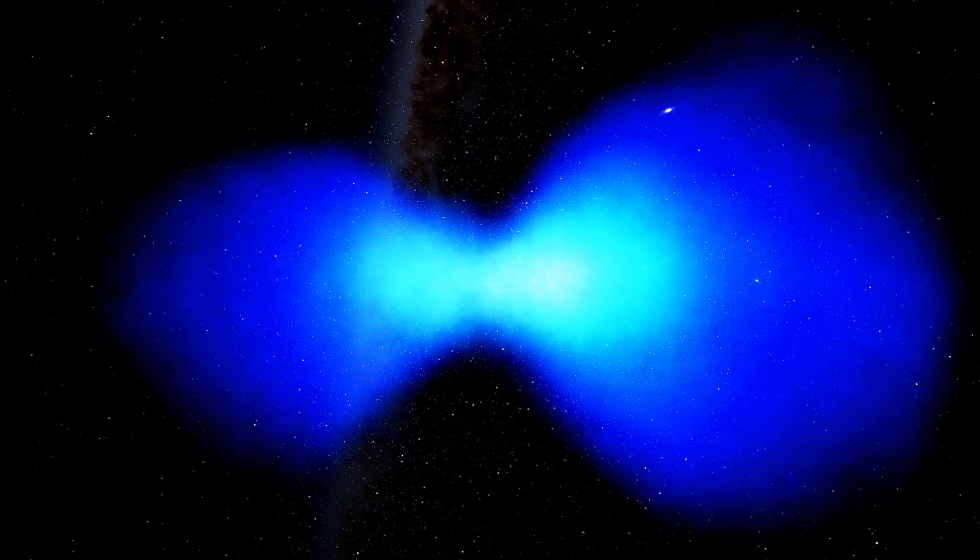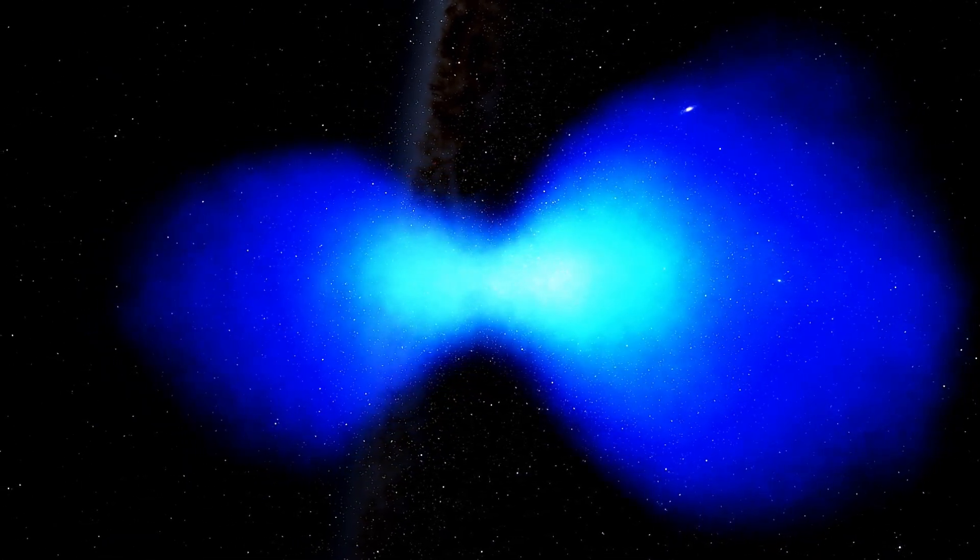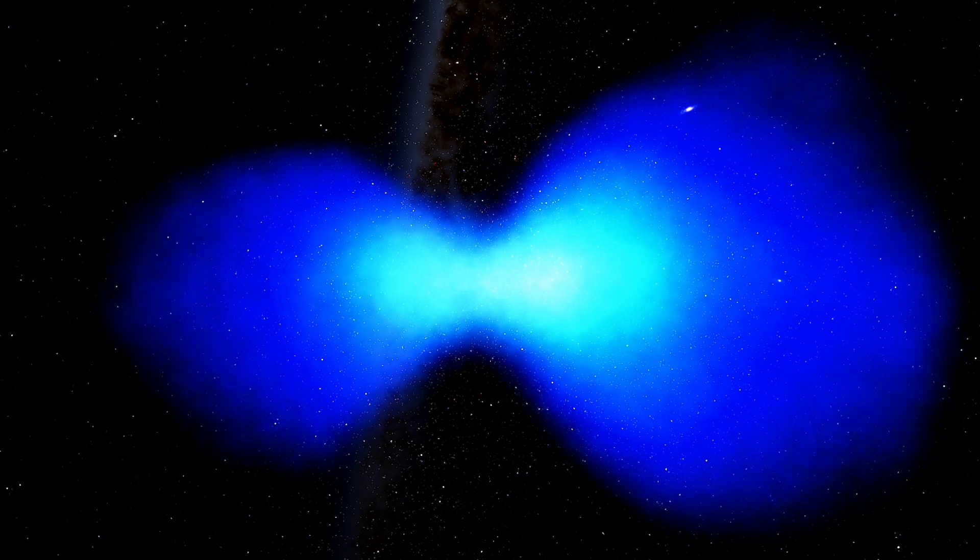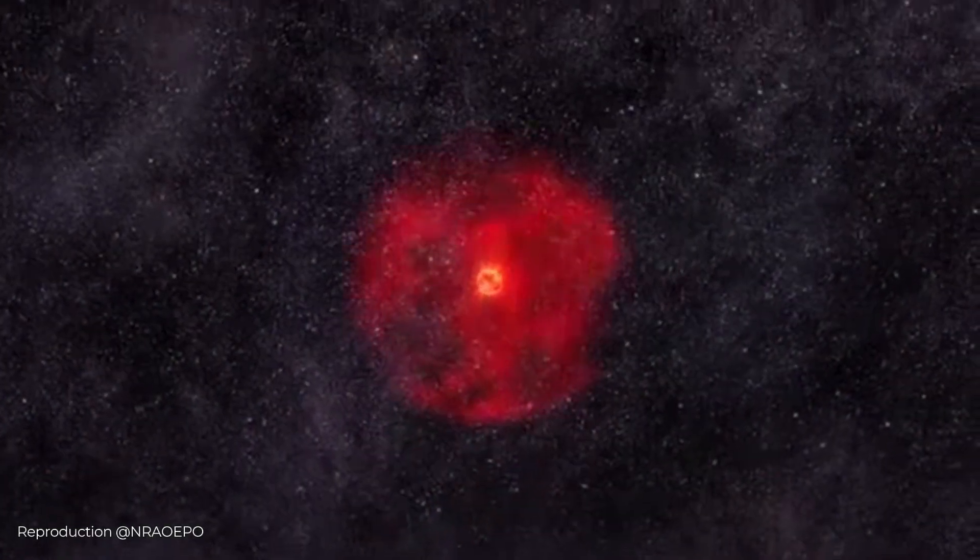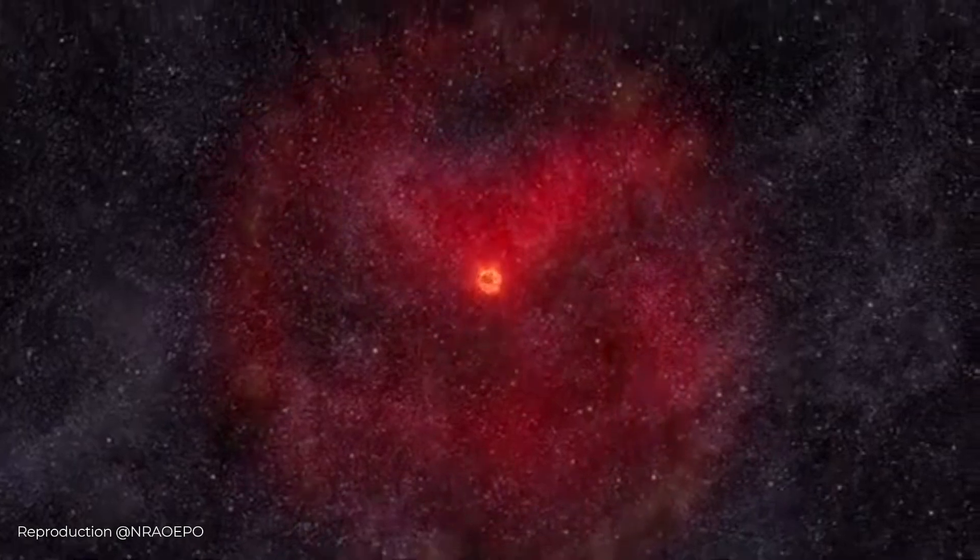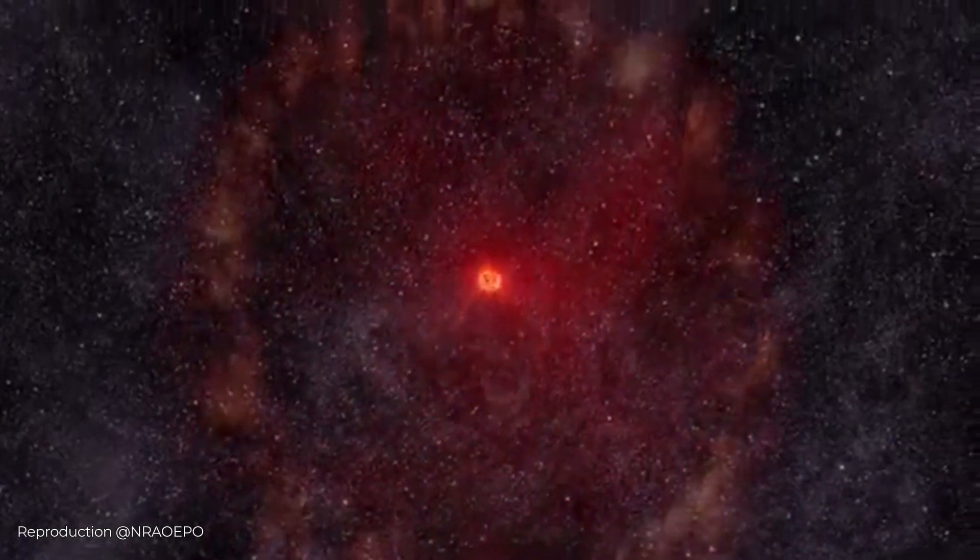It is classified as a protoplanetary nebula, a fleeting stage in stellar evolution that precedes the formation of a planetary nebula. During this phase, the dying star sheds its outer layers at an extraordinary rate, creating the expanding cloud of gas and dust we observe today.